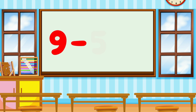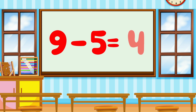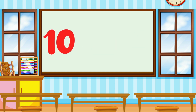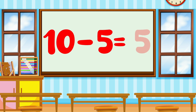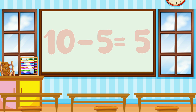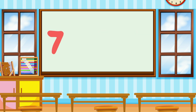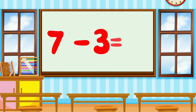...5 is equal to 5. 7 minus 3 is equal to 4. 9 minus 5 is equal to 5. 7 minus 3 is equal to 4.